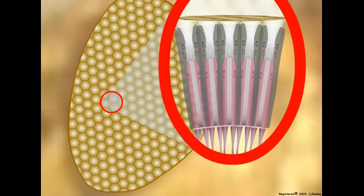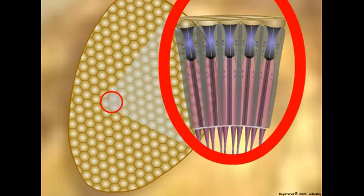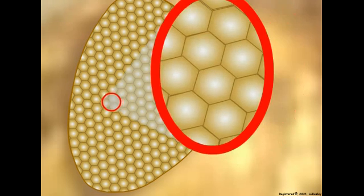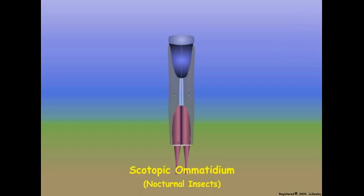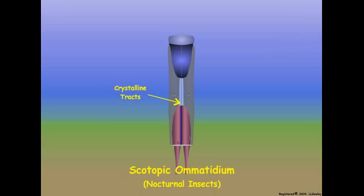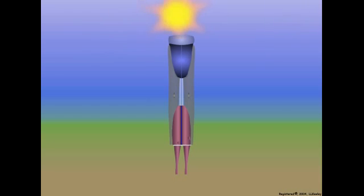Next, we will compare the structure and function of the photopic eye of day-active insect species to the eye of night-active insect species. Ommatidia in the compound eyes of nocturnal insects are referred to as scotopic ommatidia. Scotopic ommatidia have an open space referred to as the clear zone between the crystalline cone and the retinula cells. The clear zone actually contains transparent crystalline tracts that arise from the retinula cells and extend to the crystalline cone. The crystalline tracts act as light guides.